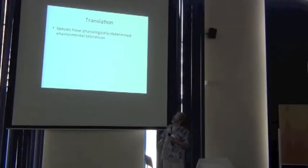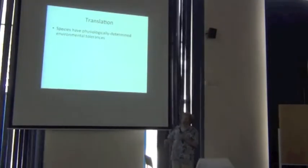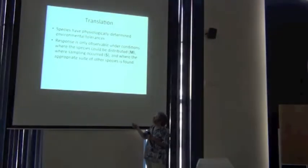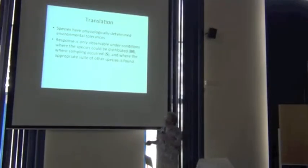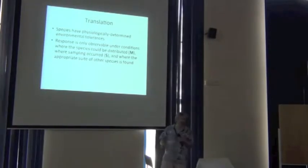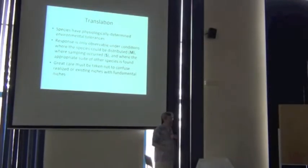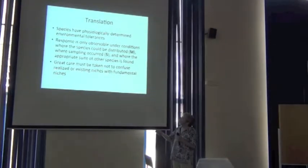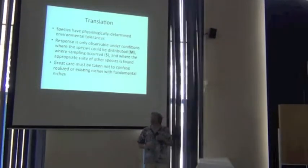So, translating all of that, species have physiologically determined environmental tolerances. That's A, right? That's the fundamental niche, which translates into area A. The response is only, the response of the species to conditions is only observable where the species occurs. Those are the effects of M. And also, where we've sampled, those are the effects of S. And where the appropriate set of species is present, those are the effects of B. And so, we have to be very careful throughout this whole process that we're going to explore, not to confuse realized or existing niches with what are generally fundamental niches. That's a pretty critical point.